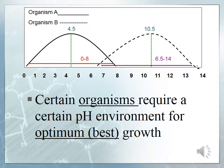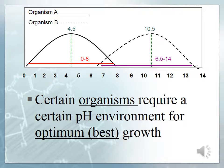Make sure you draw the pH graph in your fill-in notes — I'll be checking for that in lab. Certain organisms require a certain pH environment for best growth; the word we use for best is optimal. The optimal pH environment for organism A would be 4.5.